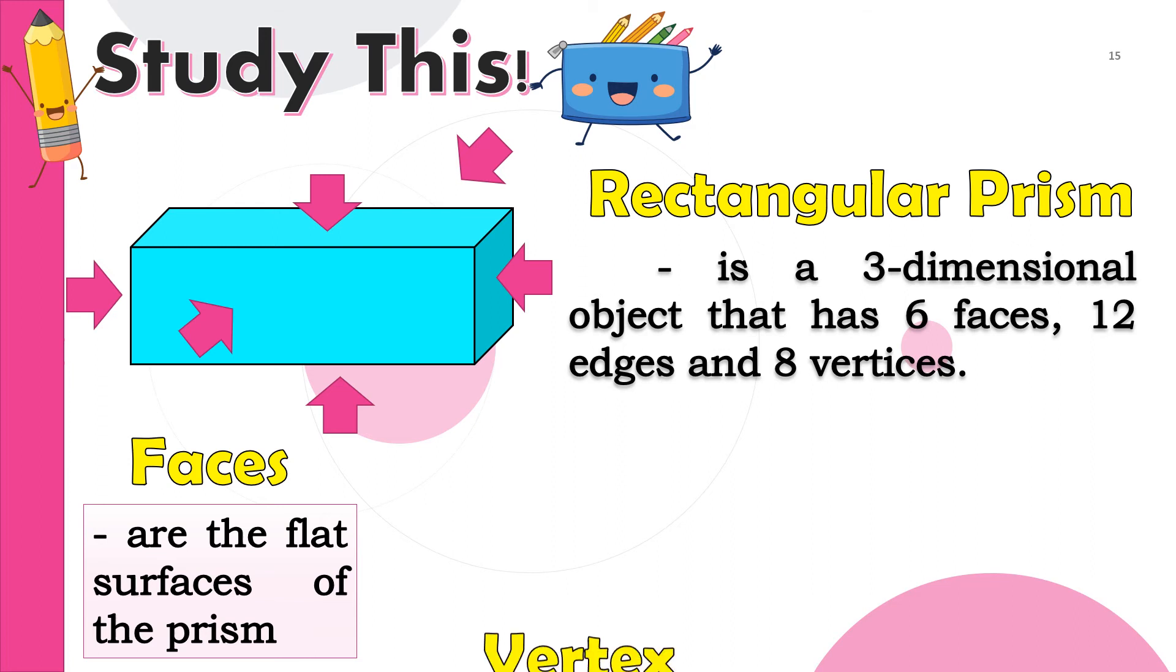We have vertex or vertices in plural. It is the corner of the prism. Ito yung mga kanto or ito yung mga points sa box. When we say edge, it is a line segment between faces of the prism. Ito yung linya sa pagitan ng dalawang kanto or points.